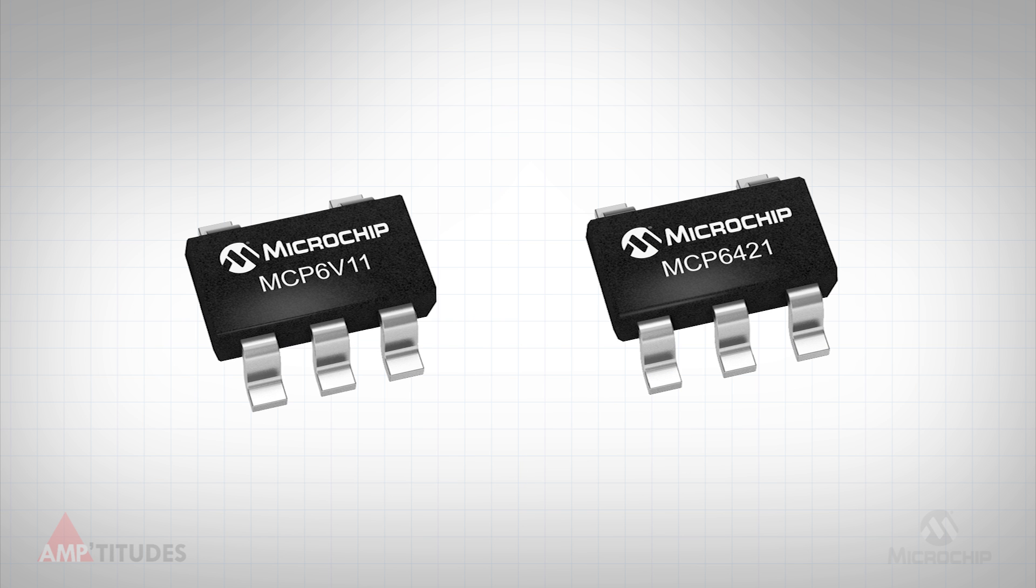Microchip offers a wide variety of amplifiers that are suitable for use with three terminal gas detection. Zero drift amplifiers, such as the MCP-6V11, offer exceptional performance and low power, while the MCP-6421 offers a more cost-effective alternative while still providing low offset and low bias current.